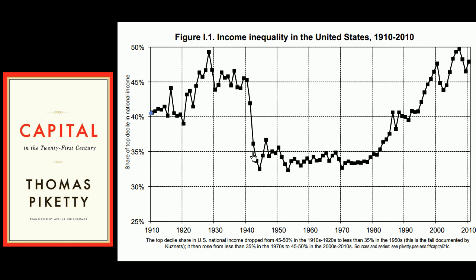This right over here is from Thomas Piketty's book — he's made all of the charts available online — and this shows income inequality in the United States between 1910 and 2010. He measures it by the share of the top decile, the top 10%, in national income. This point tells us that in 1910, the top 10% of earners made a little over 40% of national income. As we go into the late 1920s, that approaches 50%.